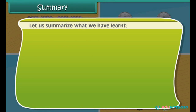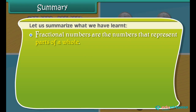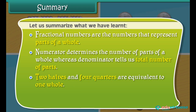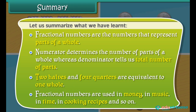Let us summarize what we have learned. Fractional numbers are the numbers that represent parts of a whole. The numerator determines the number of parts of a whole, whereas the denominator tells us the total number of parts. Two halves and four quarters are equivalent to one whole. Fractional numbers are used in money, in music, in time, in cooking recipes, and so on.